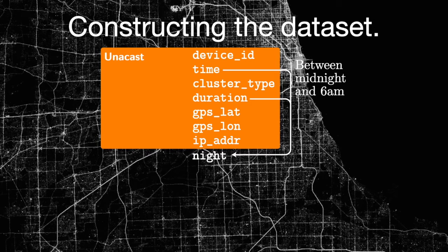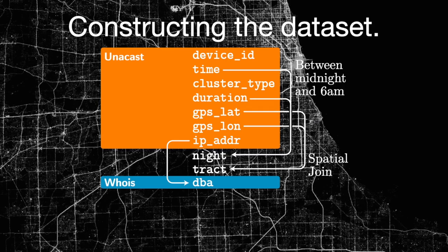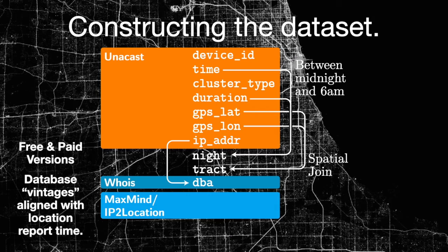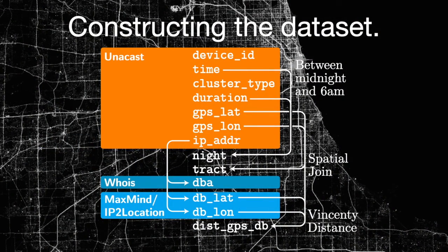Using the time and cluster duration, we constructed an indicator for devices at night, which is useful as a proxy for home locations. We merged the GPS-based location to neighborhoods, or census tracts, using a spatial join to figure out neighborhood demographics. We used Whois to determine IP addresses' ISPs by their doing-business-as name, distinguishing mobile from fixed-line offerings for providers like Verizon and AT&T. We then used both the free and paid versions of MaxMind IP geolocation databases, aligned our vintages with the location data, did the IP-to-location lookup, and calculated the Vincenty distance between the locations reported by the GPS and by the database. This distance is our primary parameter of interest, and we call it the geolocation error.